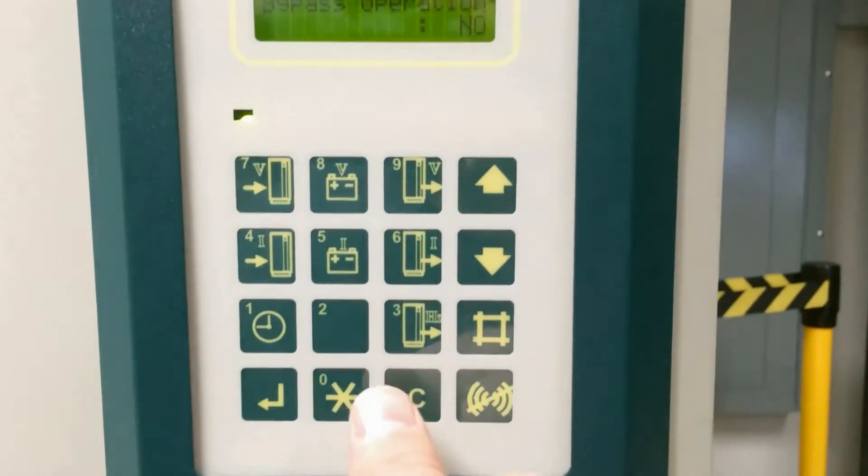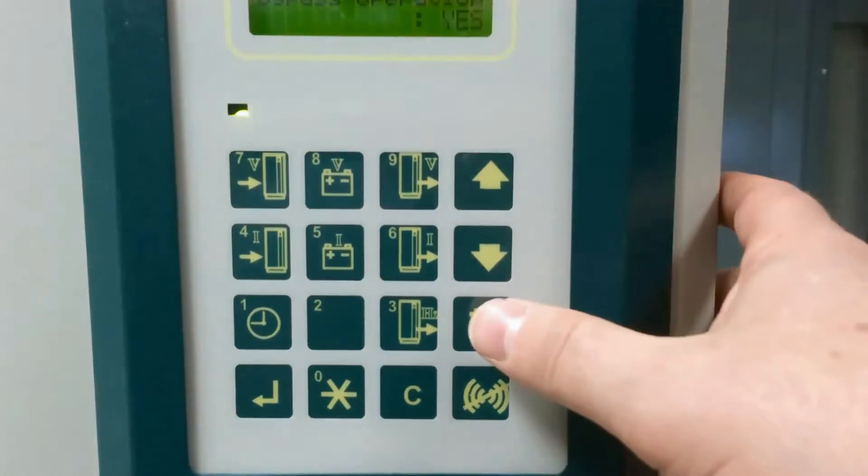Now we're going to change it by hitting the C key. Now we're going to store it by hitting the pound key.